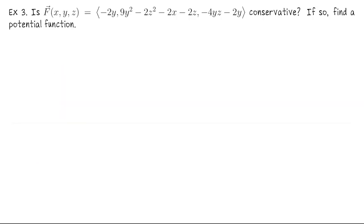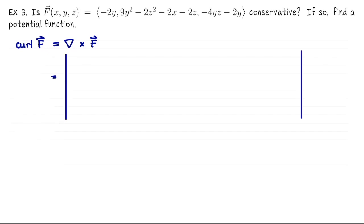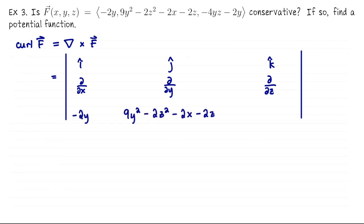Same question as before, but for this vector field: F(x, y, z) equals (−2y, 9y² − 2z² − 2x − 2z, −4yz − 2y). Is this a conservative vector field? If so, let's find the entire family of potential functions. Just like before, we need to compute the curl of this vector field — it's defined on all of R3, so our test is valid. This vector field is kind of big, so let me write a very large array with i, j, k on the first row, the operations d/dx, d/dy, d/dz on the second row, and the vector field components on the third row.